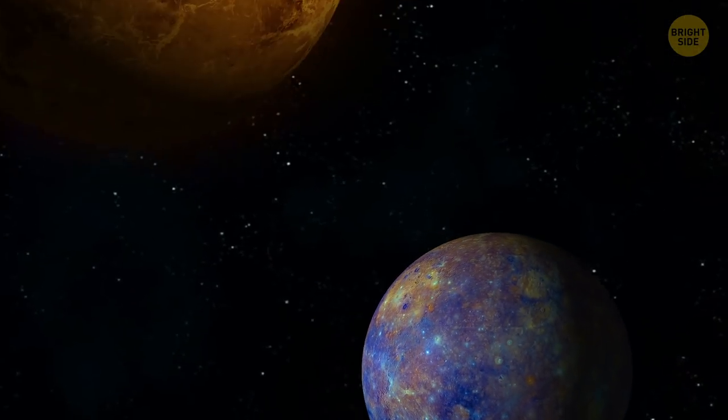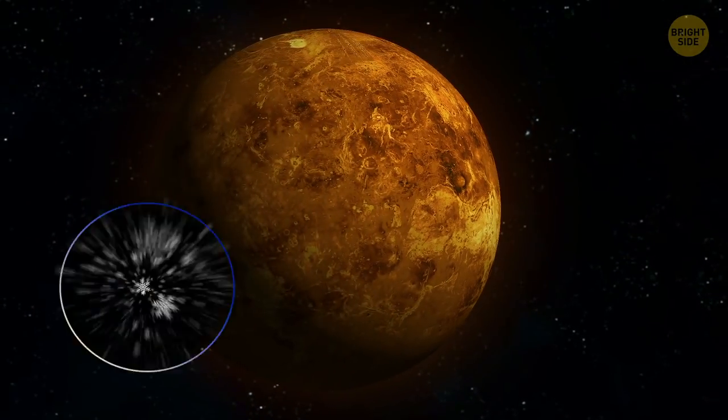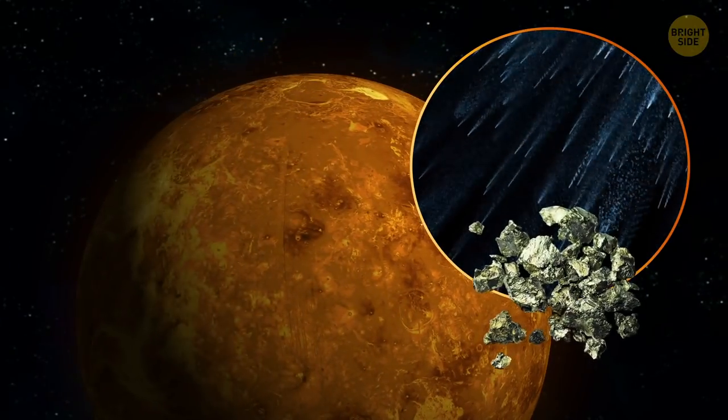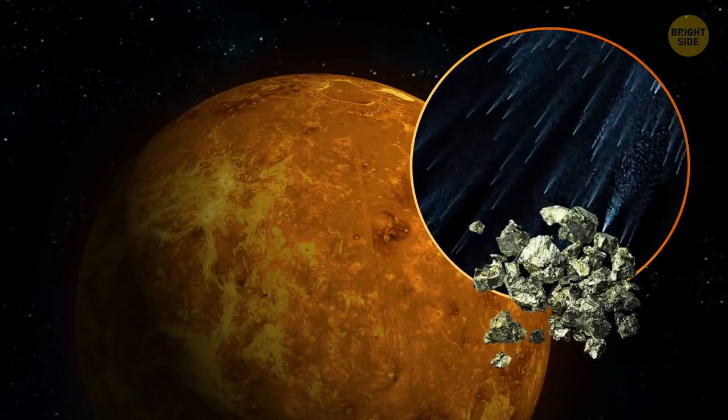Even though Venus is the hottest planet in our solar system, it still has snow, but it's not what you expect. It snows metals and rains acid. Not a great vacation spot.